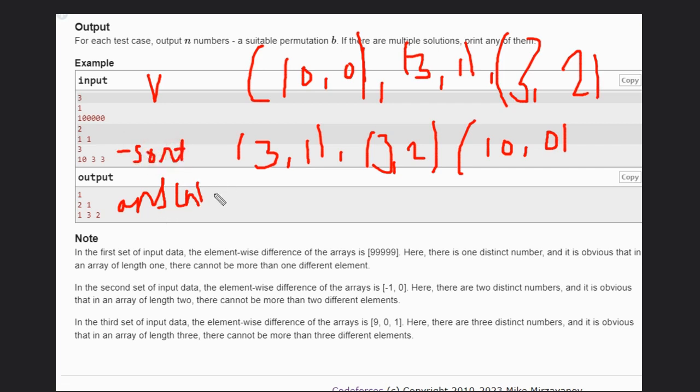So declare this vector and just make a loop: i equal to 0 to i less than n, and i plus plus.